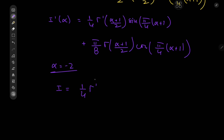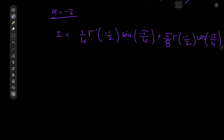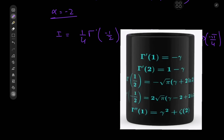Plugging in α equal to negative 2, we get I'(−2) equals one-quarter times Γ'(−1/2) times sine(−π/4) plus (π/8) times Γ(−1/2) times cosine(−π/4). Now what exactly is the derivative of the gamma function at negative one-half? You can look up a reference — the video mentions a coffee mug with important derivatives of the gamma function, including Γ''(1).